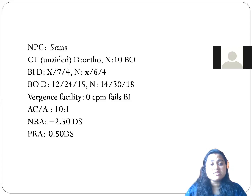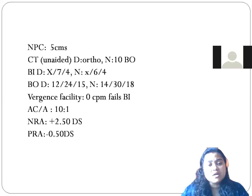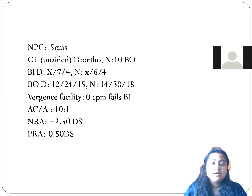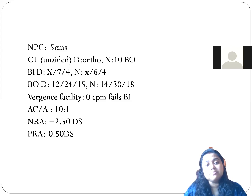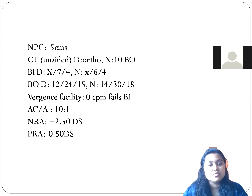On the cover test — unaided, without any refractive correction or plus lenses — we get ortho for distance, but there is a 10 prism base-out finding at near, meaning 10 prism diopters of esophoria for near. For distance, it is completely ortho.